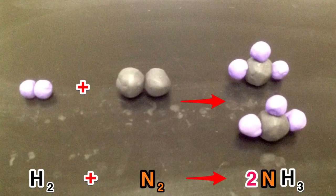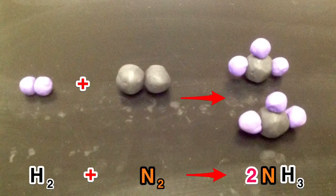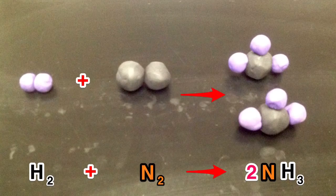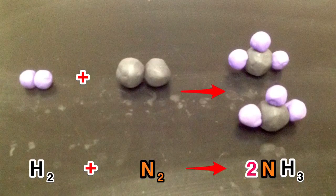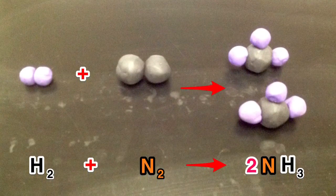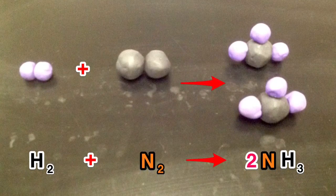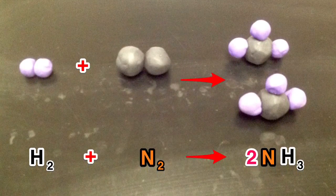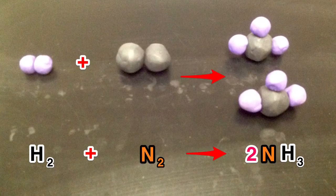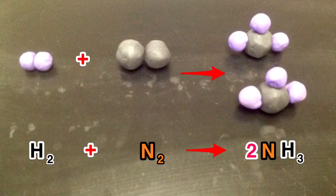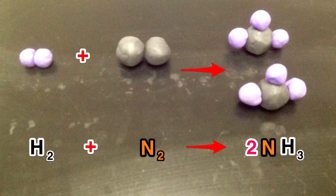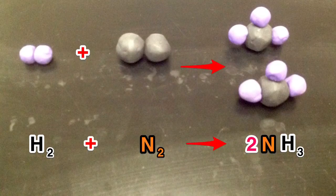To begin the balancing process, we need to balance first the nitrogen. We will do this by adding a second ammonia molecule to the right. In doing this, we need to place a coefficient of two in front of ammonia, NH3, in our balanced chemical equation. That coefficient tells us we have two molecules of ammonia.